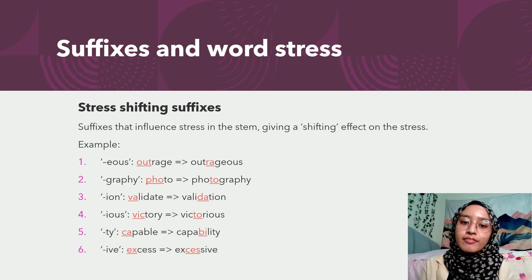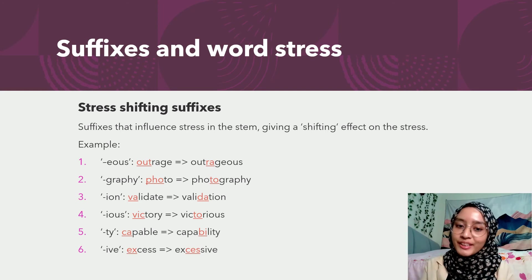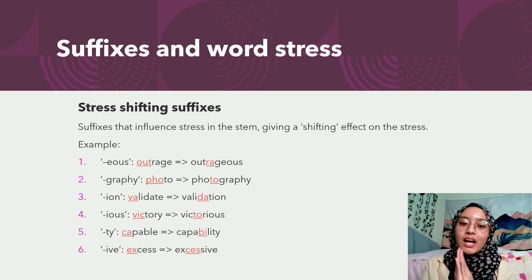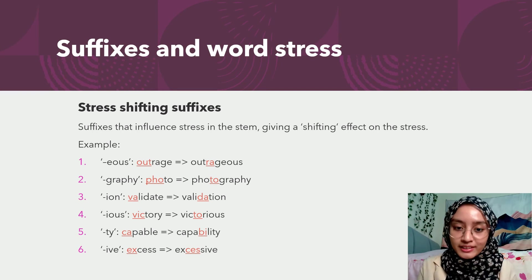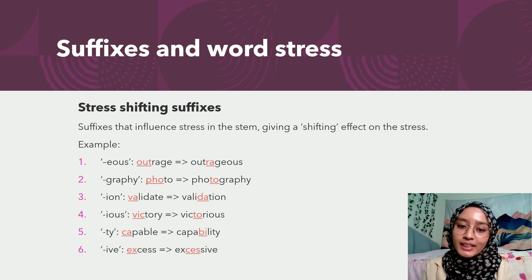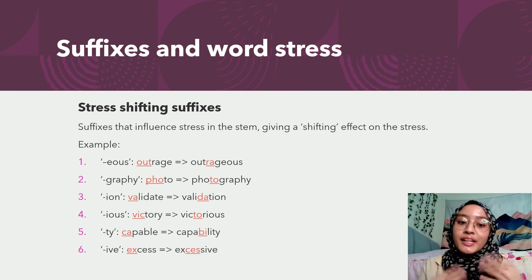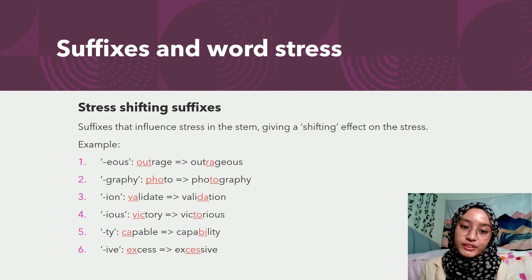A stress-shifting suffix is when the suffix in the stem gives a shifting effect on the stress. For example, 'outrage' and 'outrageous' — can you hear the difference? In the root word, the stress is placed on the first syllable, but after the suffix was added, the stress automatically shifted to the second syllable — 'outrageous'. Same goes to the other examples here: 'photo', 'photography', and so on.